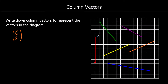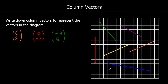The red vector goes nothing to the left or right, so 0. And it goes down 7. So 0, negative 7. The green vector goes to the left 4 and up 5. So it's negative 4 to show it's going to the left, and then up 5. The blue vector goes to the left 10 spaces and up 2. So it's negative 10, and then up 2.